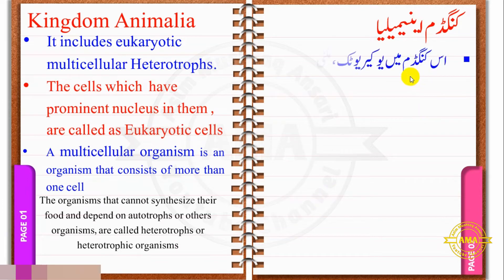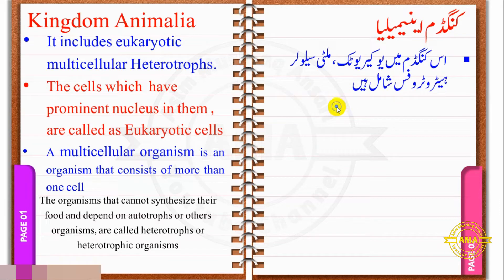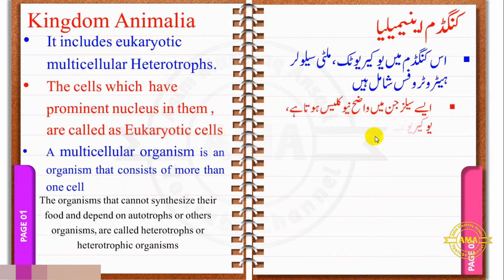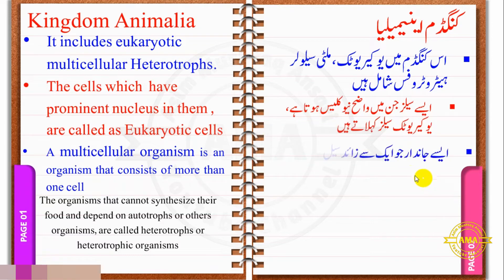Is kingdom me eukaryotic multicellular heterotrophs shamil hain. Ase cells, jin mein wazeh nucleus hota hai, eukaryotic cells kehlate hain.